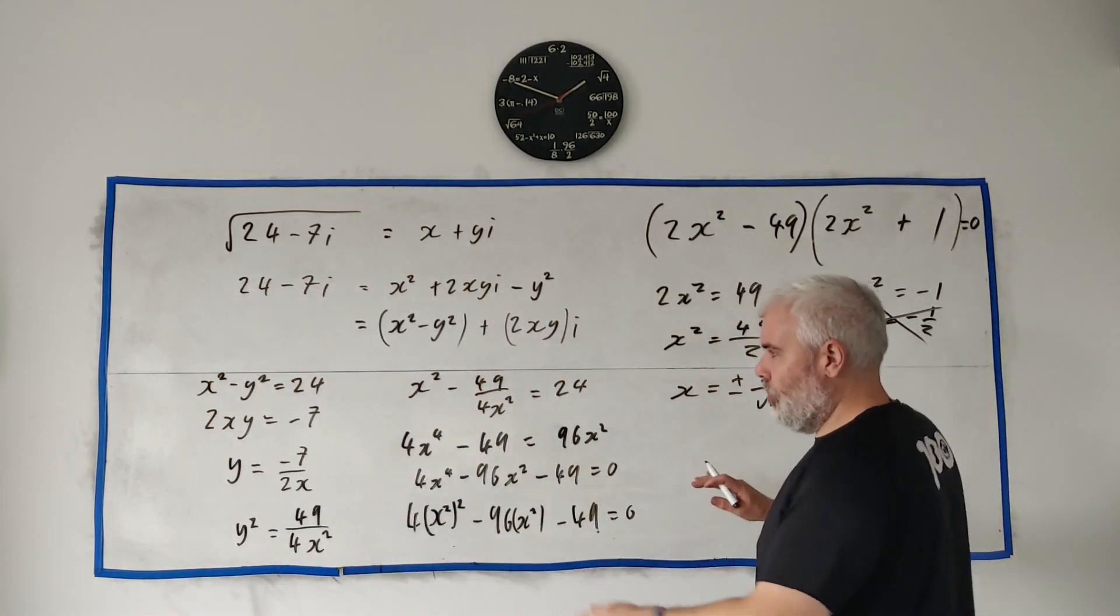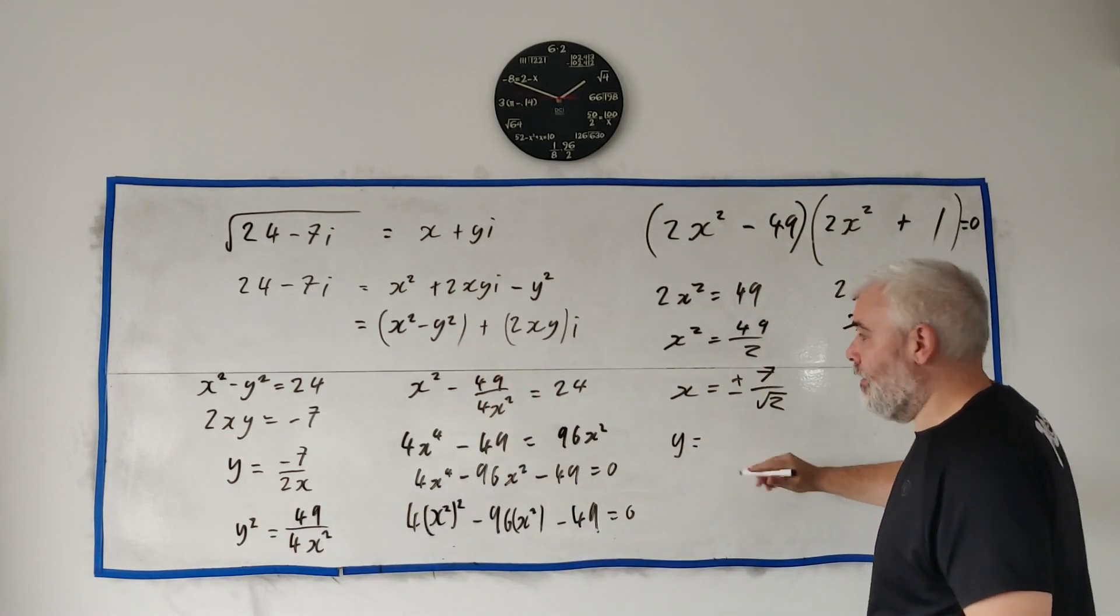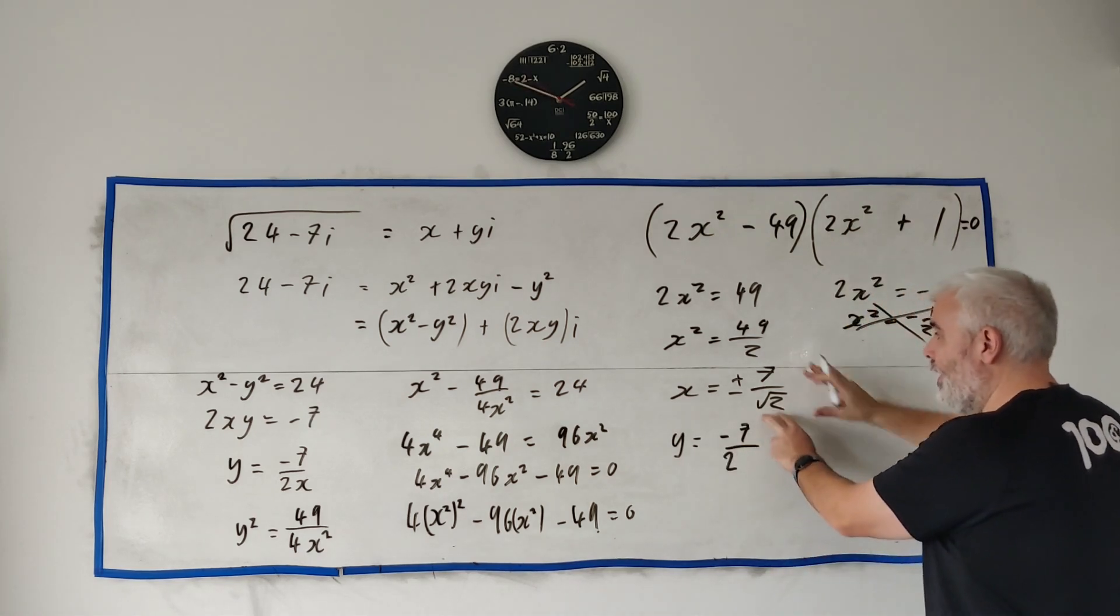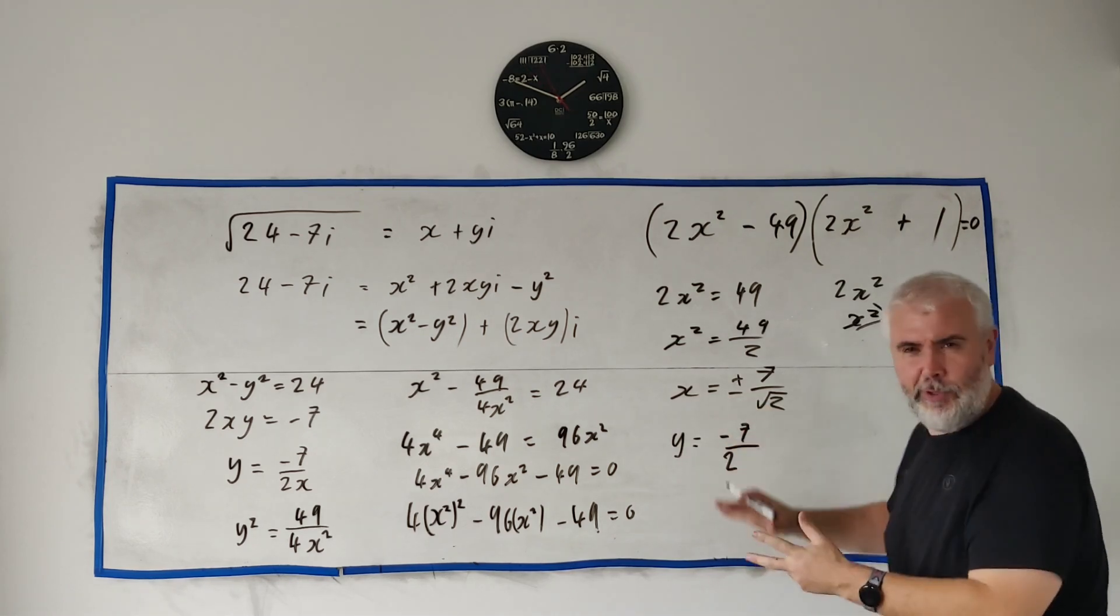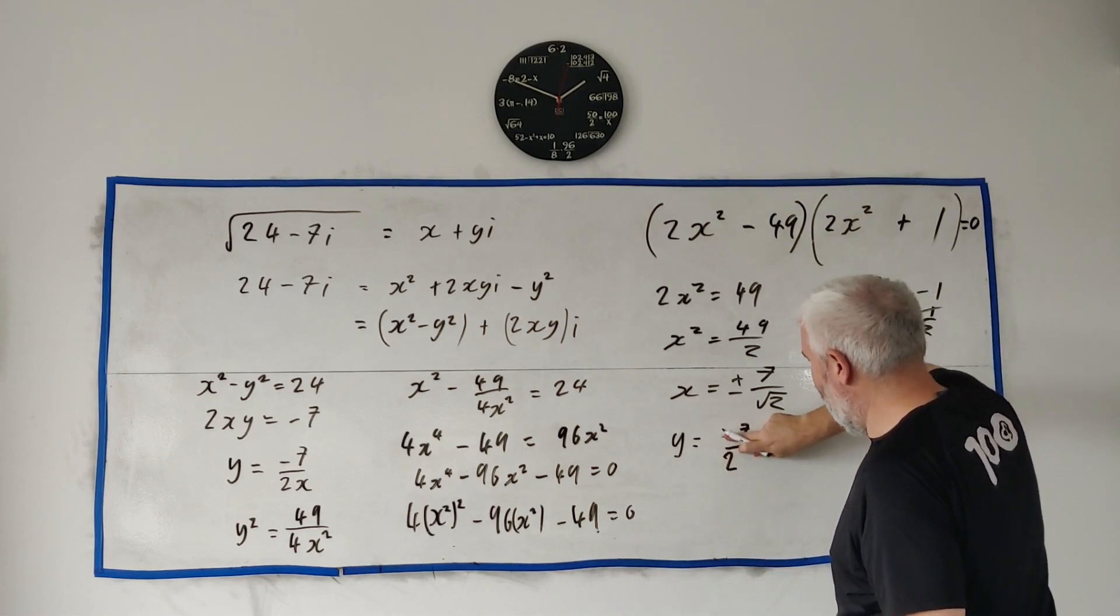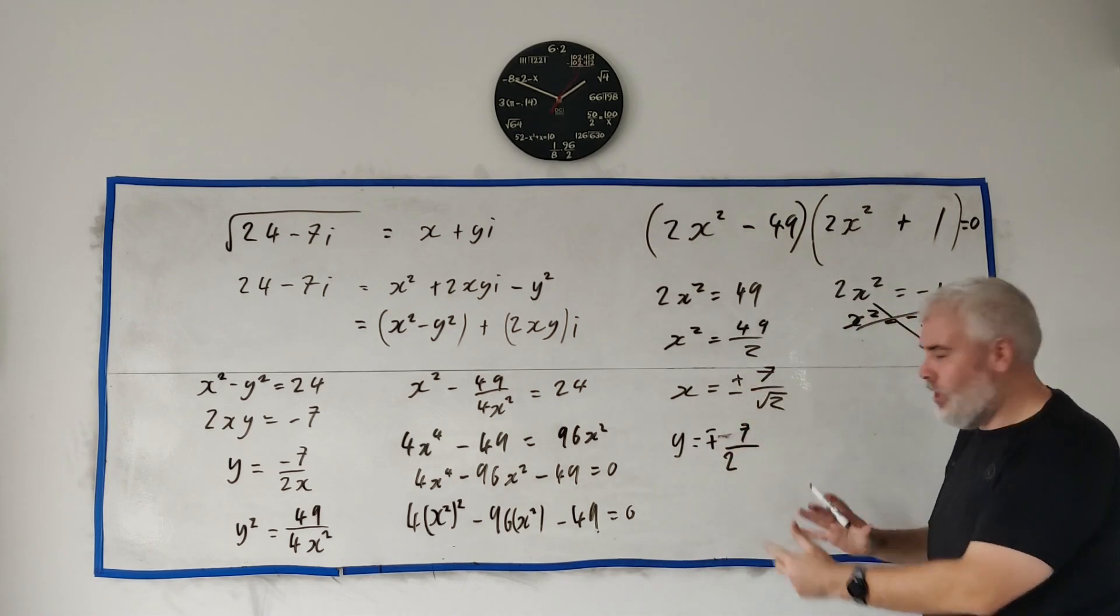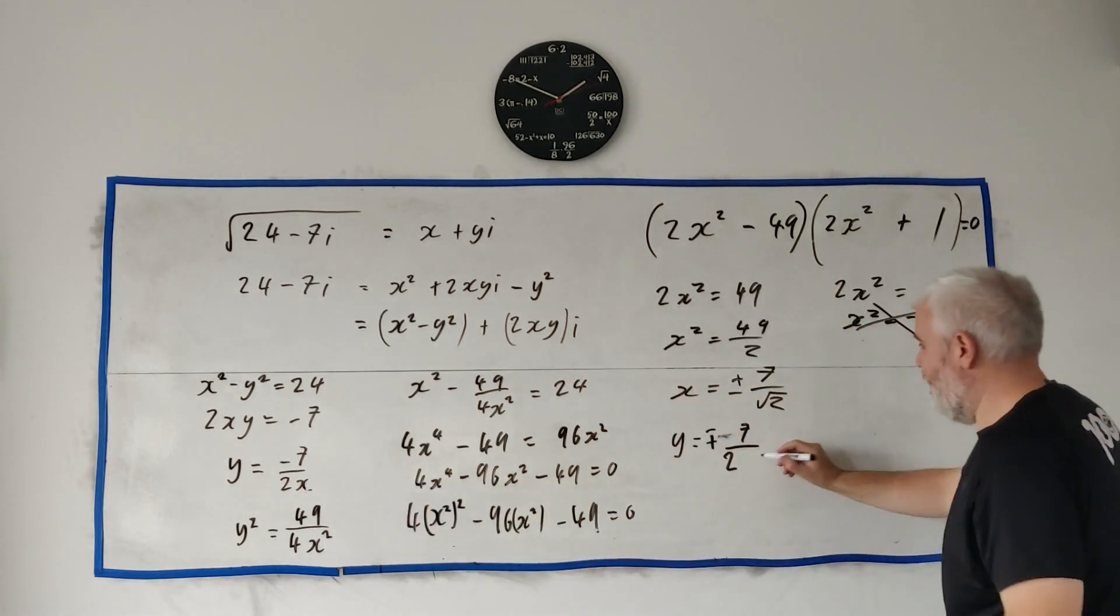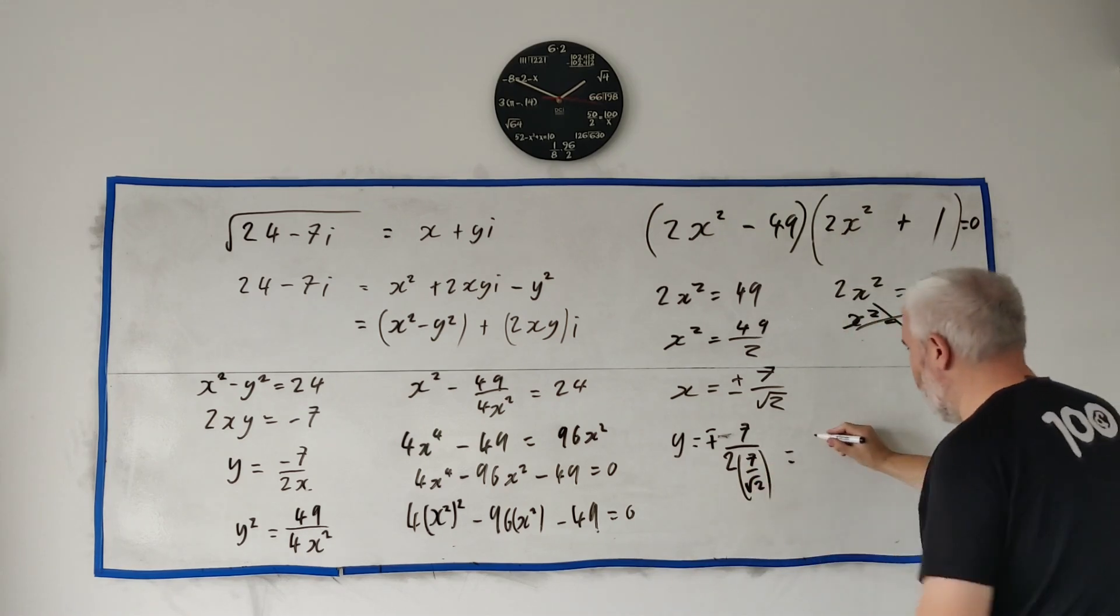So if we try and solve for y, here's a handy line here. y is equal to minus 7 over 2 times this plus or minus. You don't have to write it like this, you can just remember plus and minus, but this plus or minus will multiply by a minus. How I at least like to write it is minus plus, so I remember which go with which. And so that's 7 over 2 multiplied by the rest of x is 7 over square root of 2.